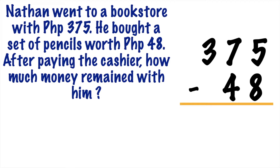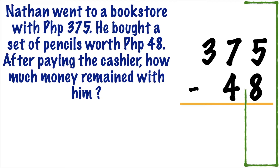And you're going to start subtracting from the ones place. So we have here 5 minus 8. Since we cannot subtract 8 from 5, we need to express the numbers differently. We call this process regrouping.